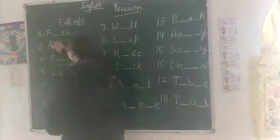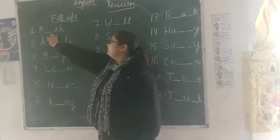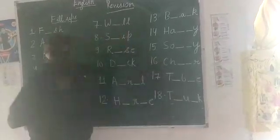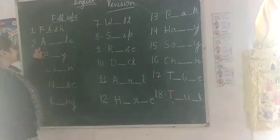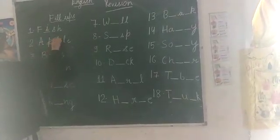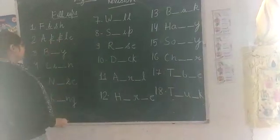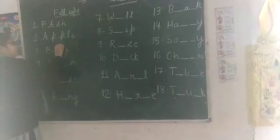Number one is means if you have a missing letter, then you have a letter right. F-S-H, so what do you mean? Fish. F-I-S-H. Fish. Then apple, A-P-P-L-E. Apple. Then number three is B-O-Y. Boy.